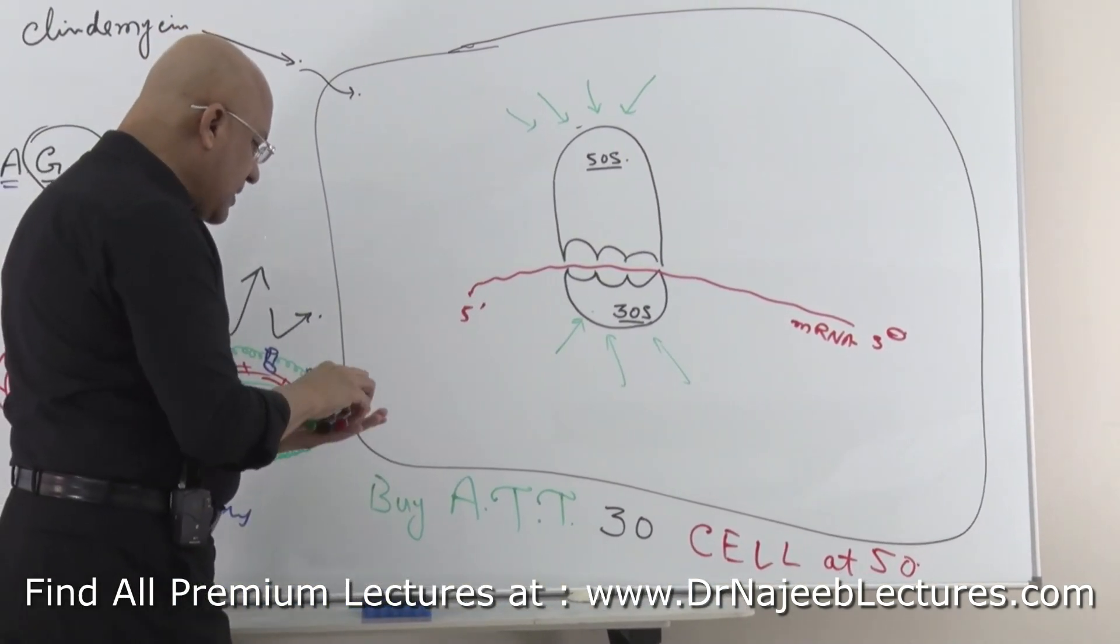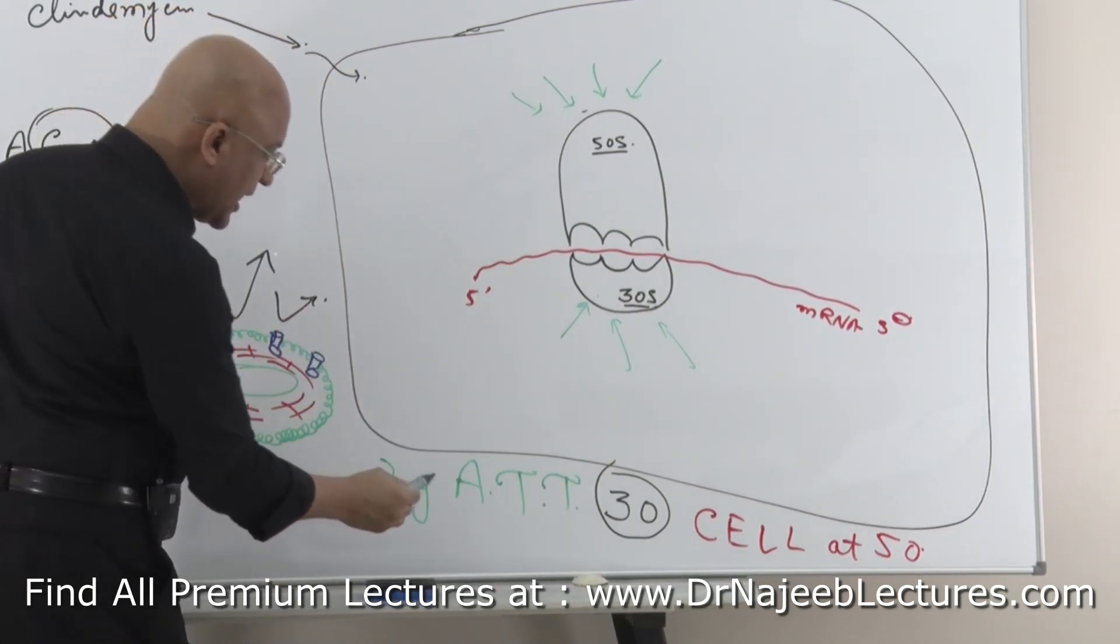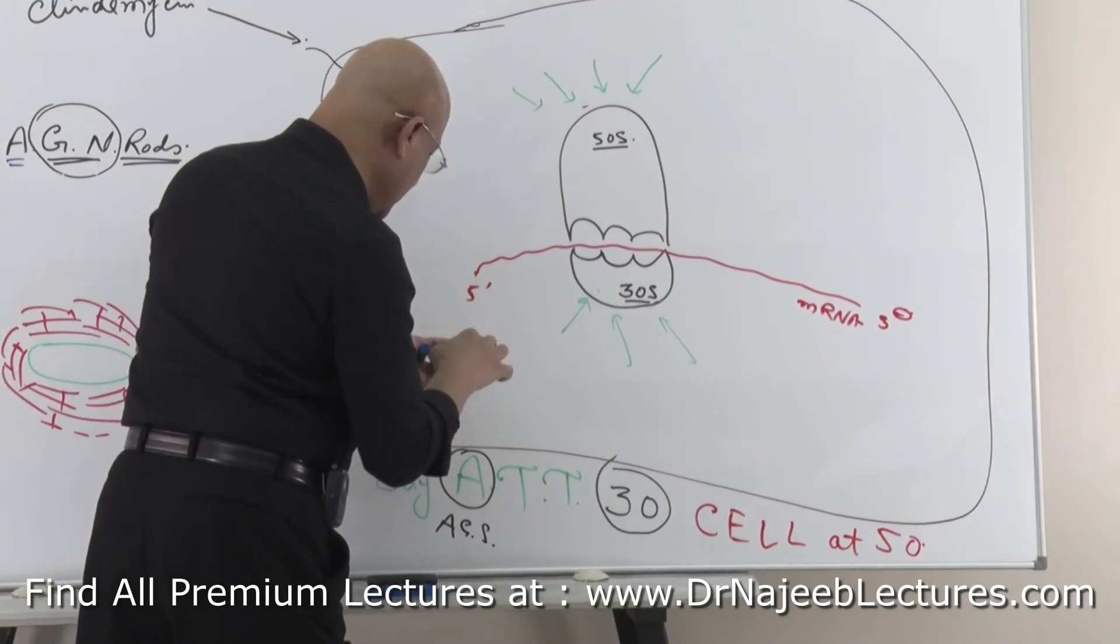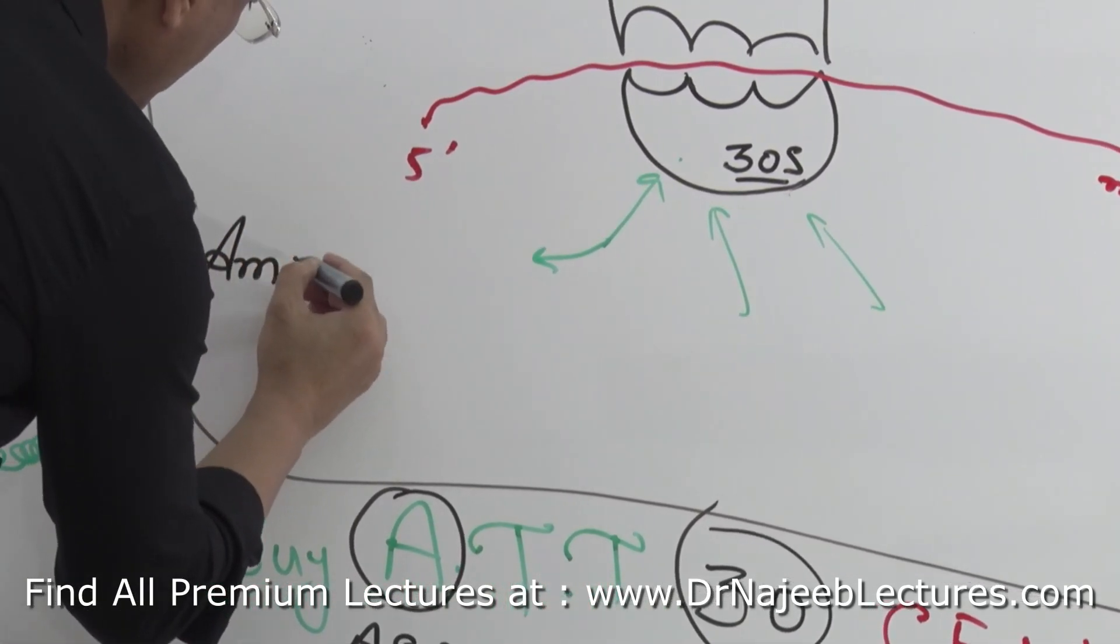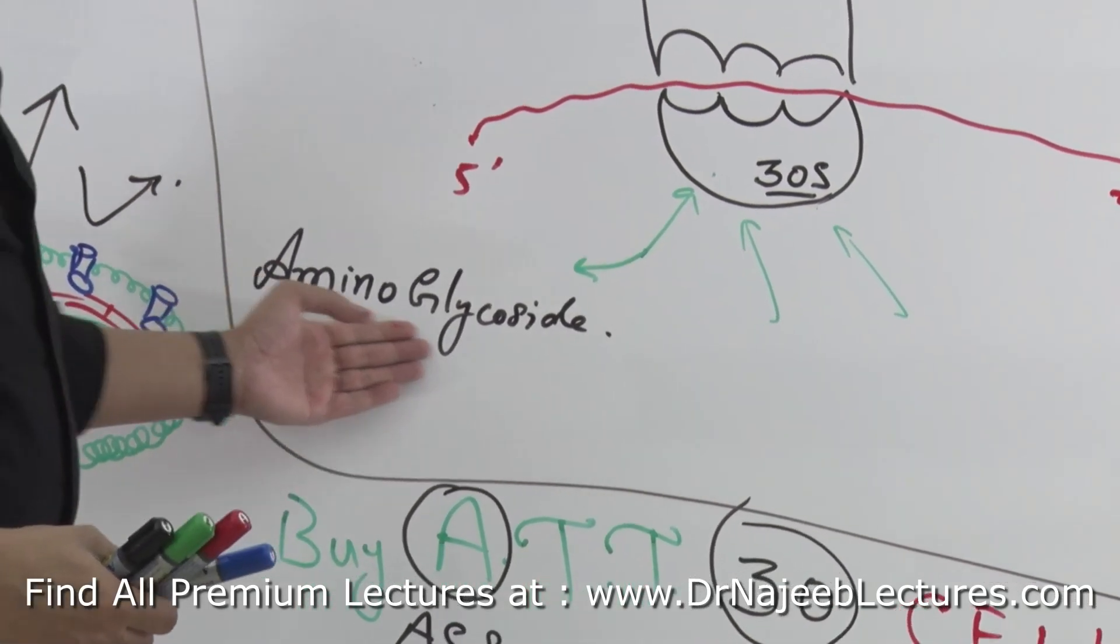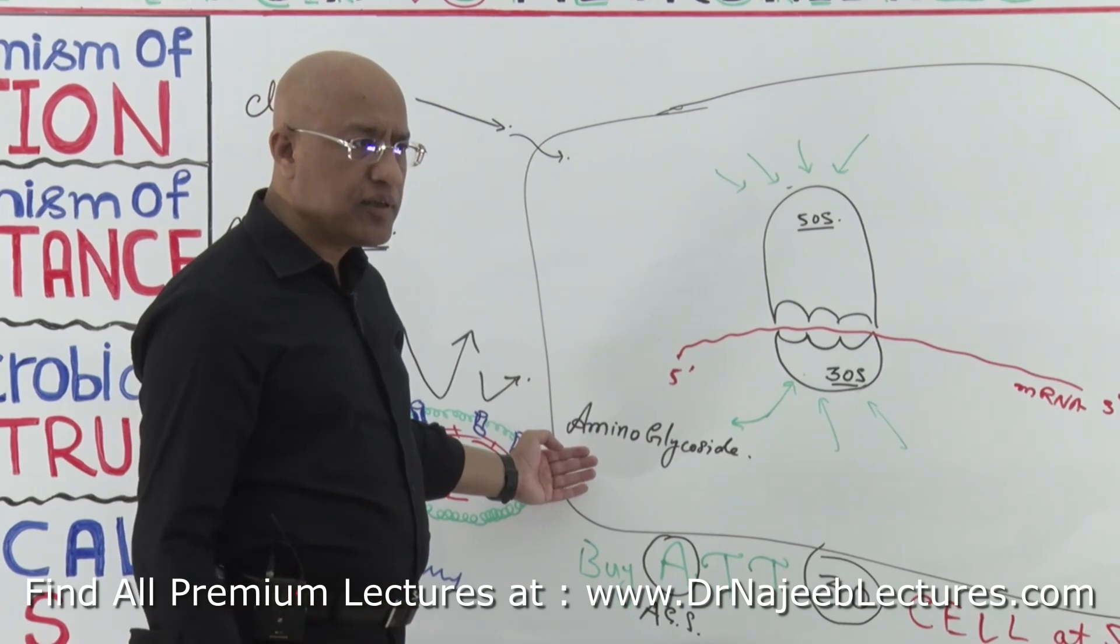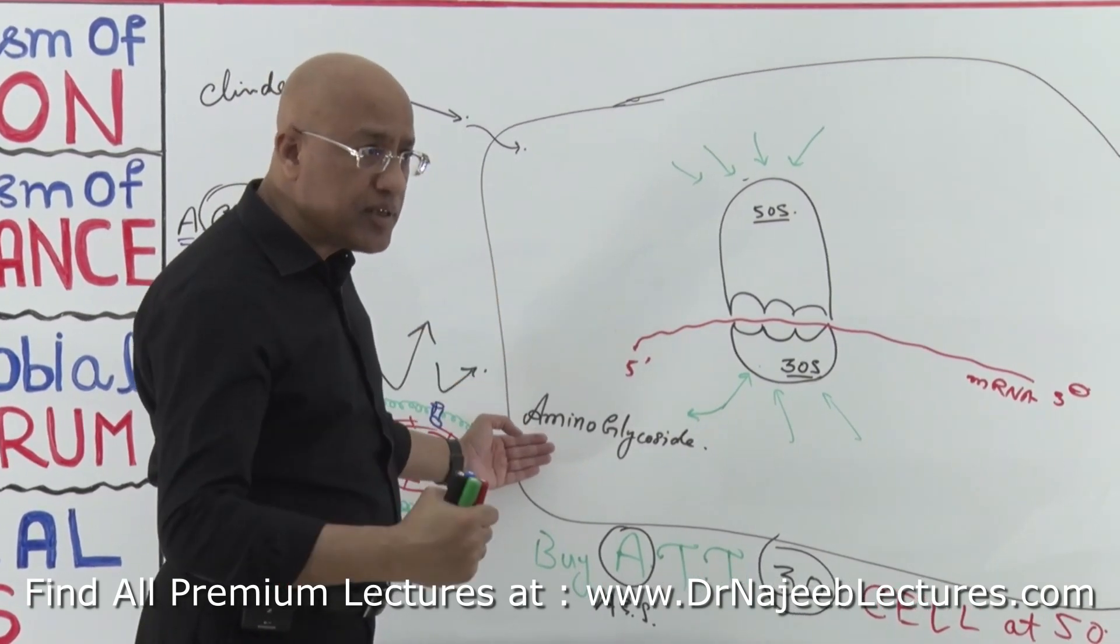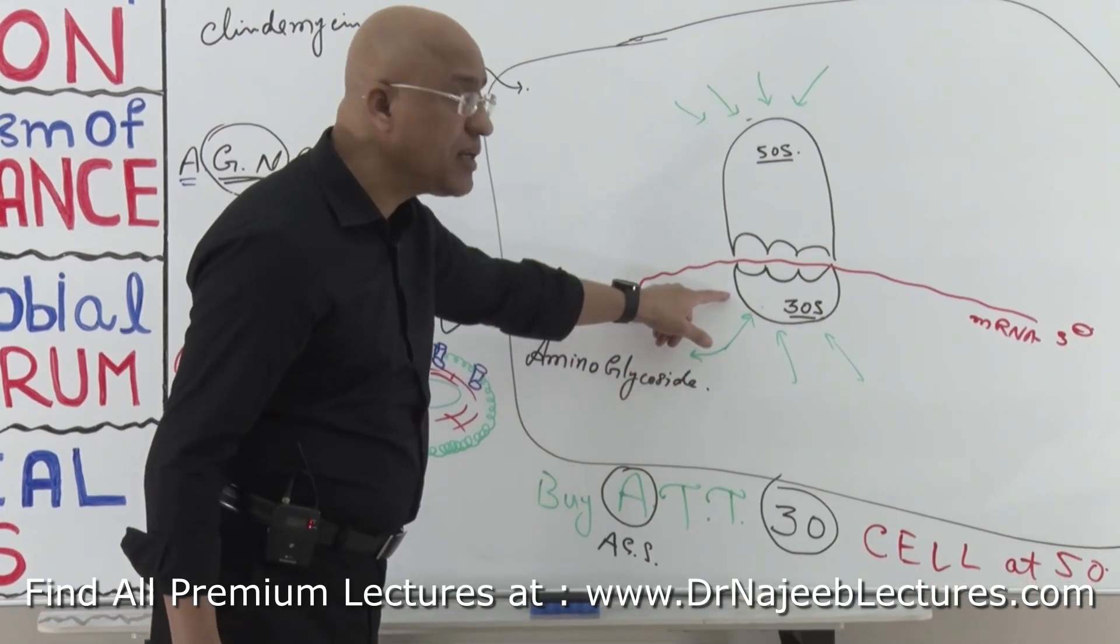It means that the drugs which work on 30S unit - drugs which act on 30S units - they are number one, A for Aminoglycosides. AT means Aminoglycosides. Aminoglycosides is a very big group of antibiotics. Many antibiotics are part of this group. For example, there is Neomycin, Tobramycin, Amikacin, and Gentamicin. All this group, they are part of A here.